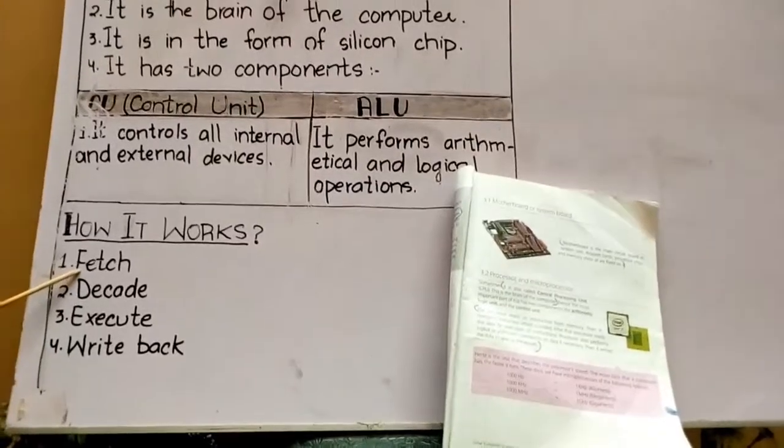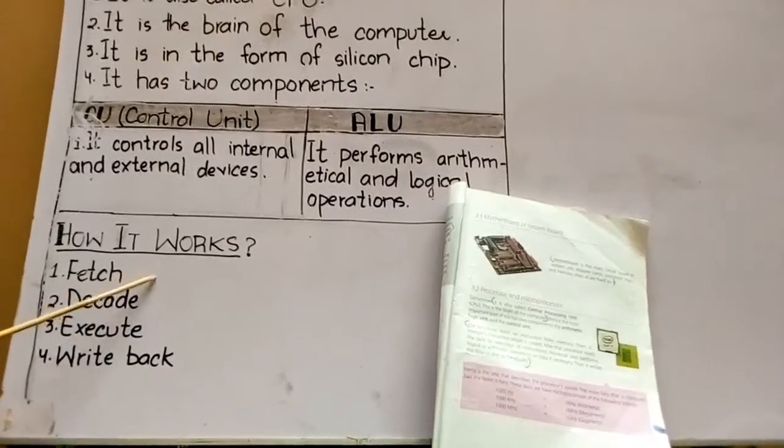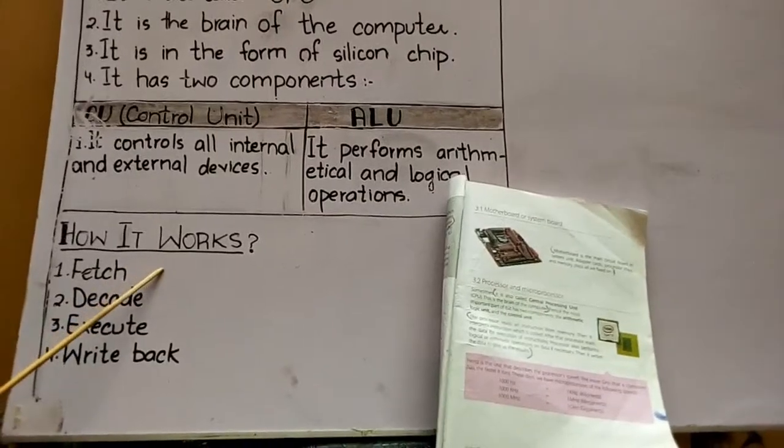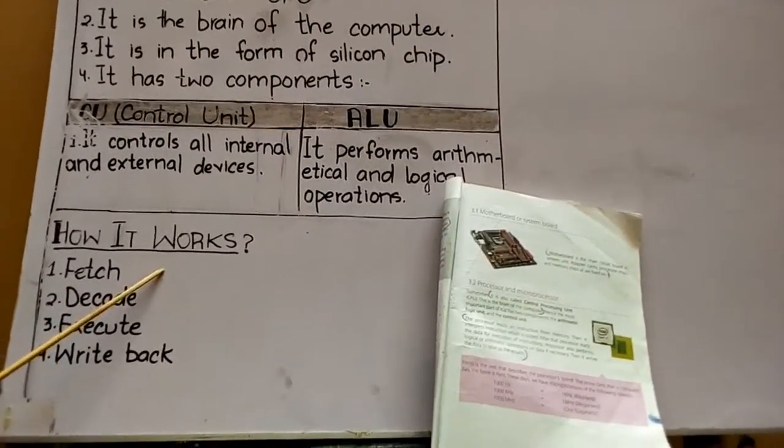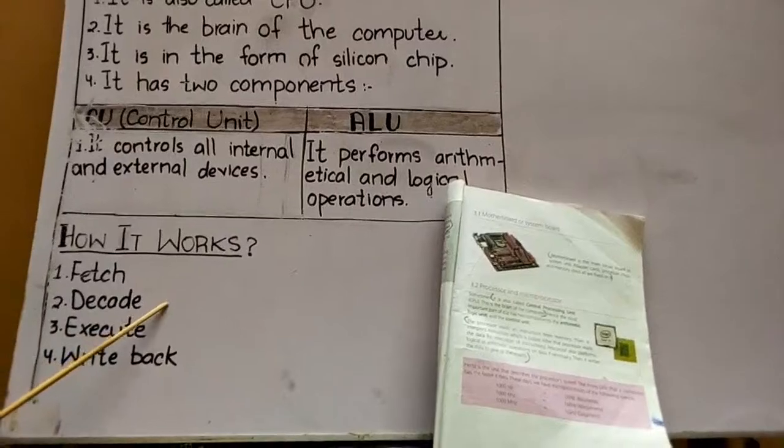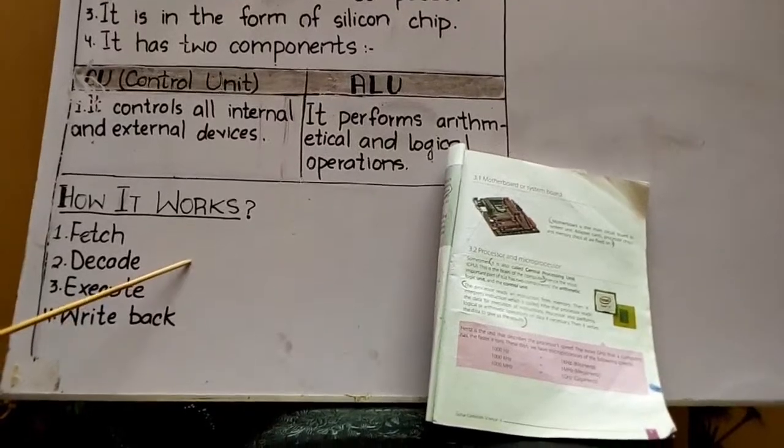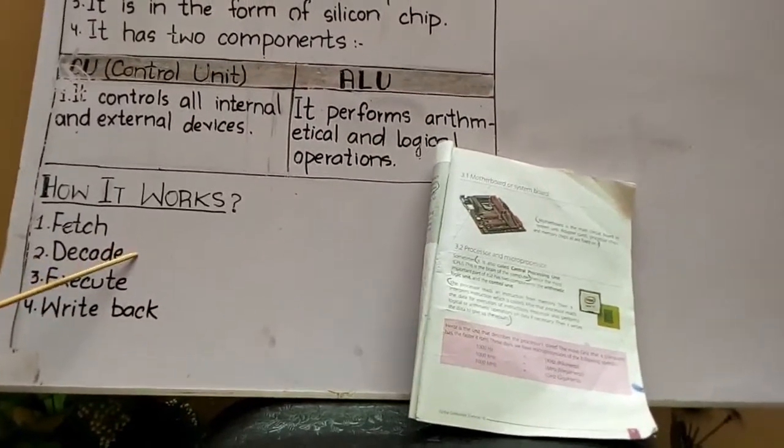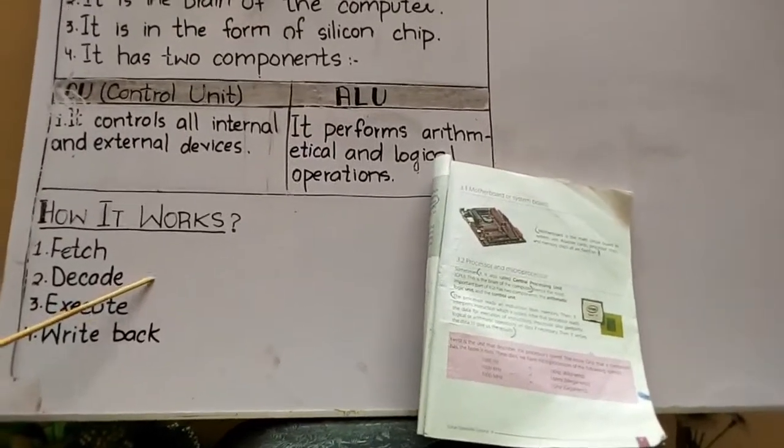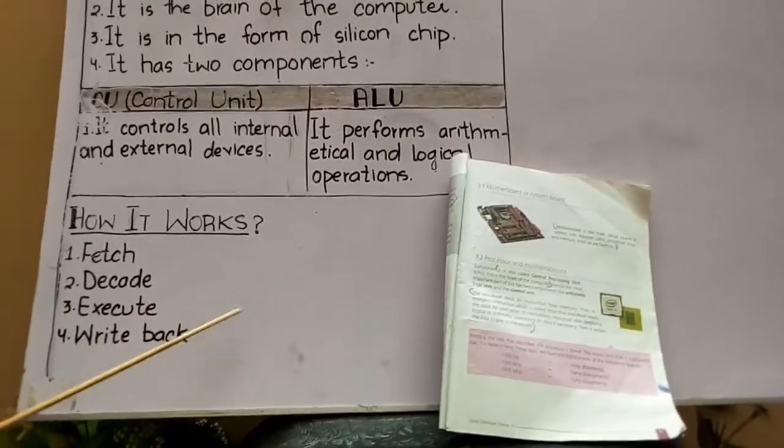What is Fetch? In this step, the processor reads an instruction from the memory. First, when you enter any instruction in the computer, the processor will read it in the first step. Second, it will decode. In decode, the processor will convert it to its own language. Whatever instructions you enter in the computer, it will convert to its own language, meaning binary language with zeros and ones. Third step: it will run it, meaning execute it.